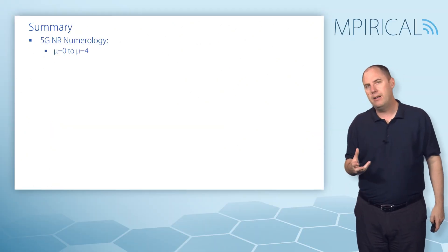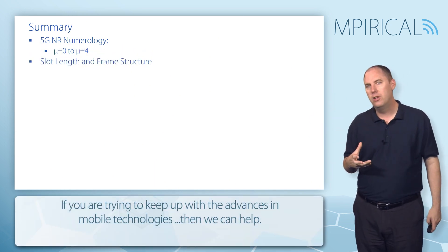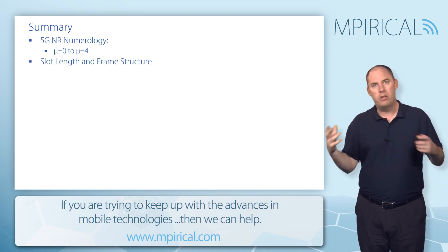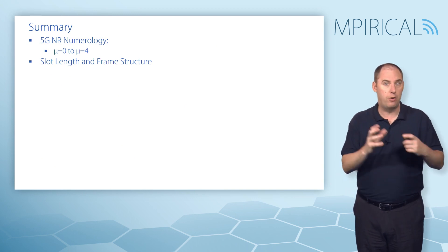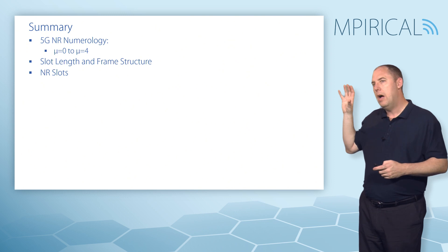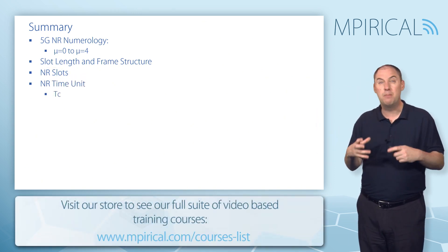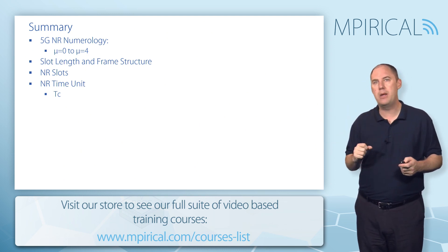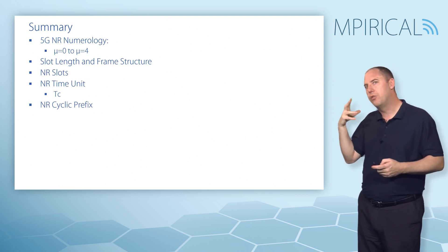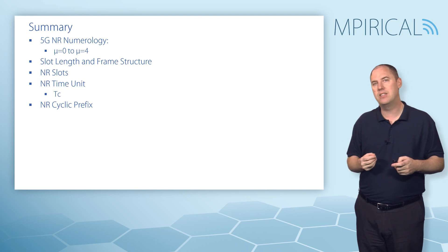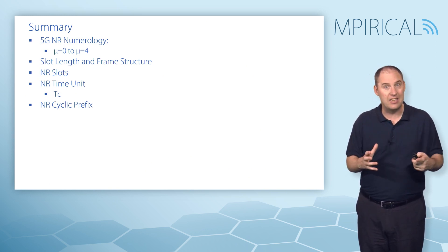In summary, we've identified 5G new radio numerology 0 to 4, looking at sub-carrier spacing and how it changes, how it influences slot size and slot length, and the makeup of the frame. You choose your band — that band determines the numerology, which determines your frame structure. Based on the numerology, you'll have a corresponding number of slots; higher numerology means more slots. We've identified that the entire air interface is based on timing using TC as the 5G time unit, with a relationship to the 4G time unit TS via the kappa value set to 64. Finally, we've identified that cyclic prefix size depends on the numerology — and the numerology, cell size, and frequency all relate to one another.